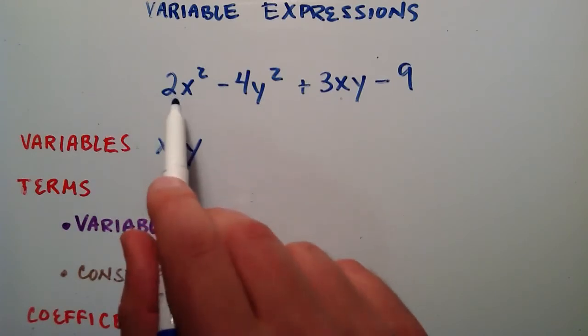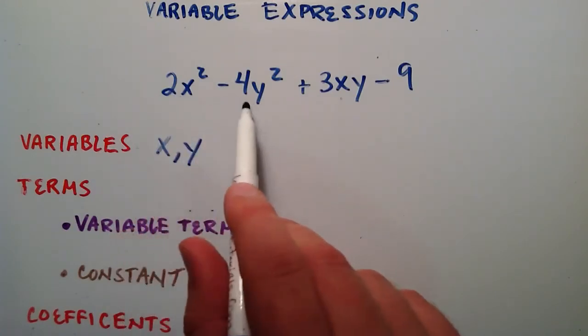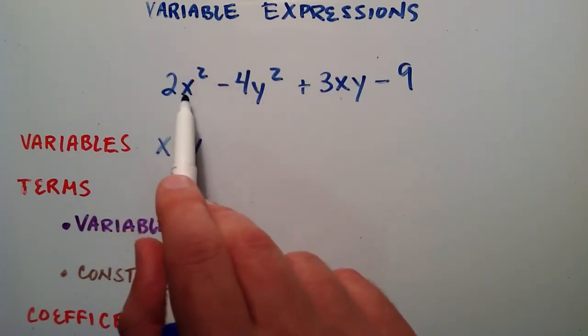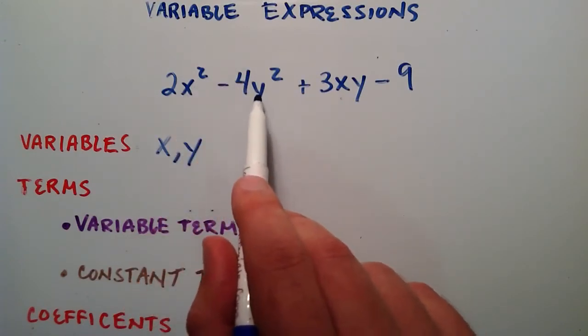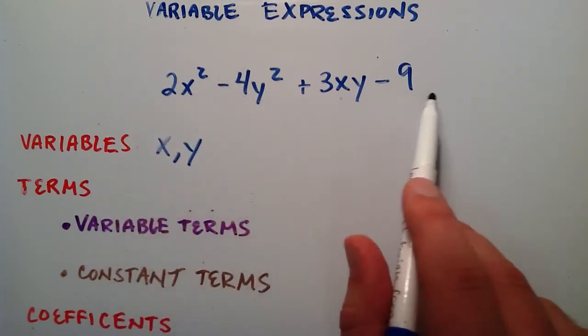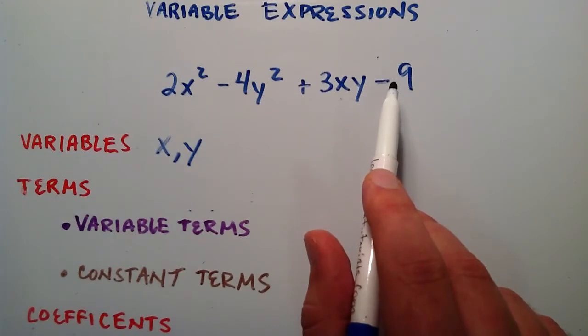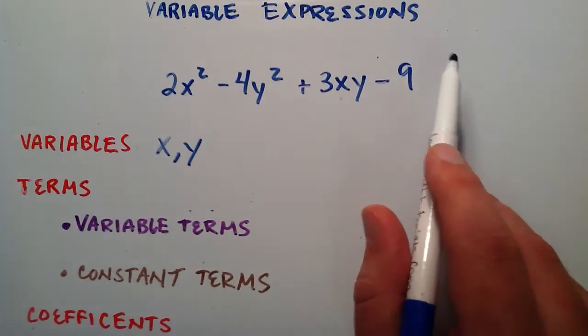Depending on what value we choose for our x and y, for instance we could choose x equals 2, y equals 3, and we'd evaluate this and get some answer. But then we could say these can change value.